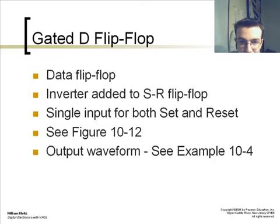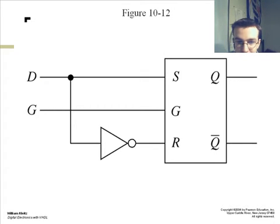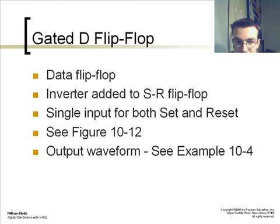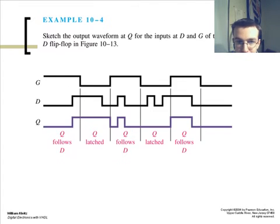Gated D flip-flop as a data flip-flop uses an inverter added to an SR flip-flop as shown here to a single output for both set and reset and the output waveform is shown here. Here your output follows your input with your D and your gate as well determining your output whether it follows or it's latched.